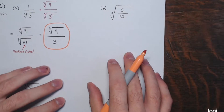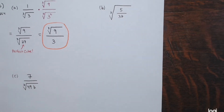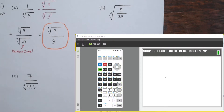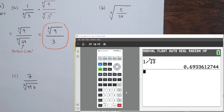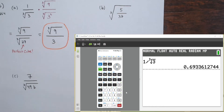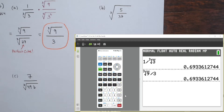I'll verify this with the calculator. The original expression 1 divided by the cube root of 3 gives 0.6933612744. The final expression, the cube root of 9 divided by 3, gives the same value — confirming it has a rationalized denominator.